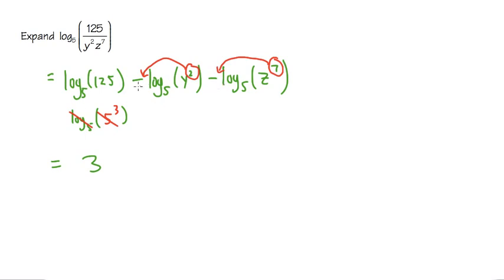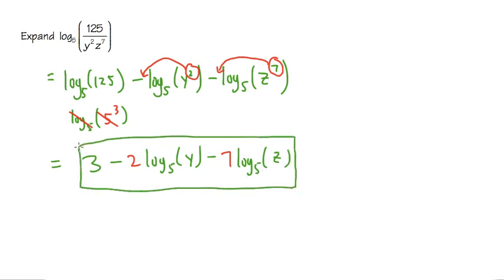So we are going to have minus, the 2 is now in the front, and then we will have log base 5 of y, and then minus, the 7 will be in the front, and then we will have log base 5 of z, like this. And this is the most that we can do. That's it.